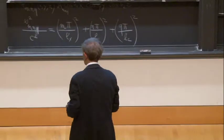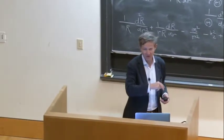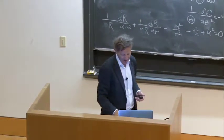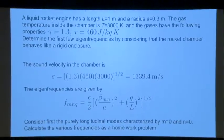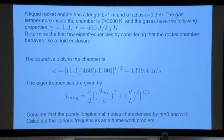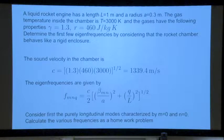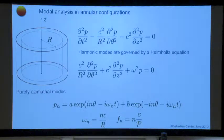So we have the cylindrical cavity, and now we go to the annular cavity because we are interested in annular combustors. This gives you a homework — if you want, you can calculate the values by looking at the table of roots of the derivative of the Bessel function. Anyway, it's given as a homework.